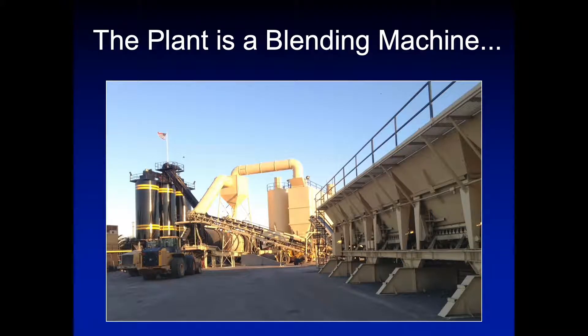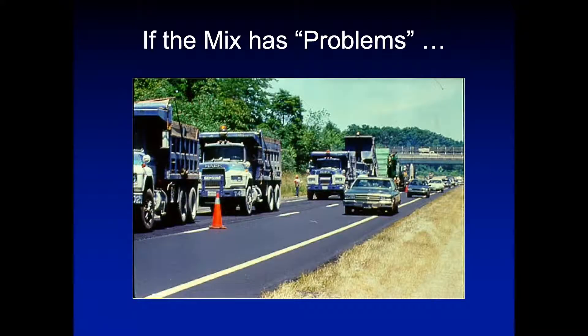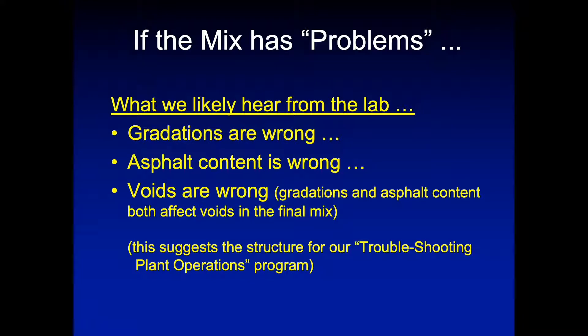We have to keep in mind that the plant is really just a blending machine. It's blending aggregate and asphalt to the right percentages of the job mix formula. We're going to dry and heat it to our specified temperature, and the whole goal is to get it loaded into the truck properly blended at the right temperature without segregating the mix. If the mix has problems, we're going to hear from the lab: gradations are wrong, asphalt content is wrong, or the voids are wrong. Voids are going to be impacted by both gradations and asphalt content, and this whole conversation suggests the outline of this program.